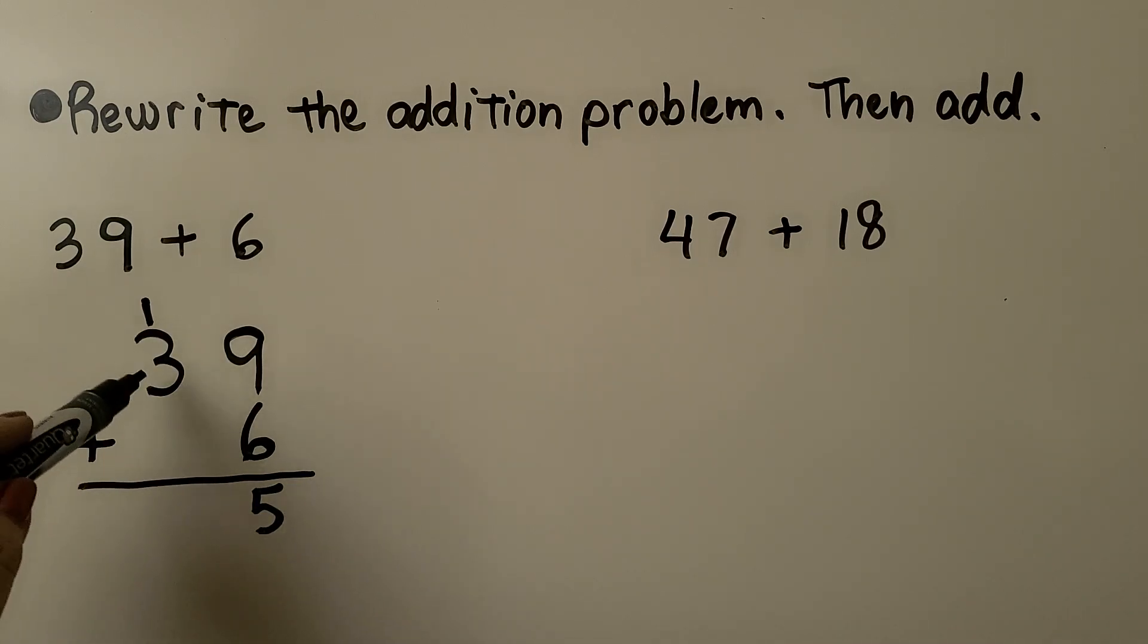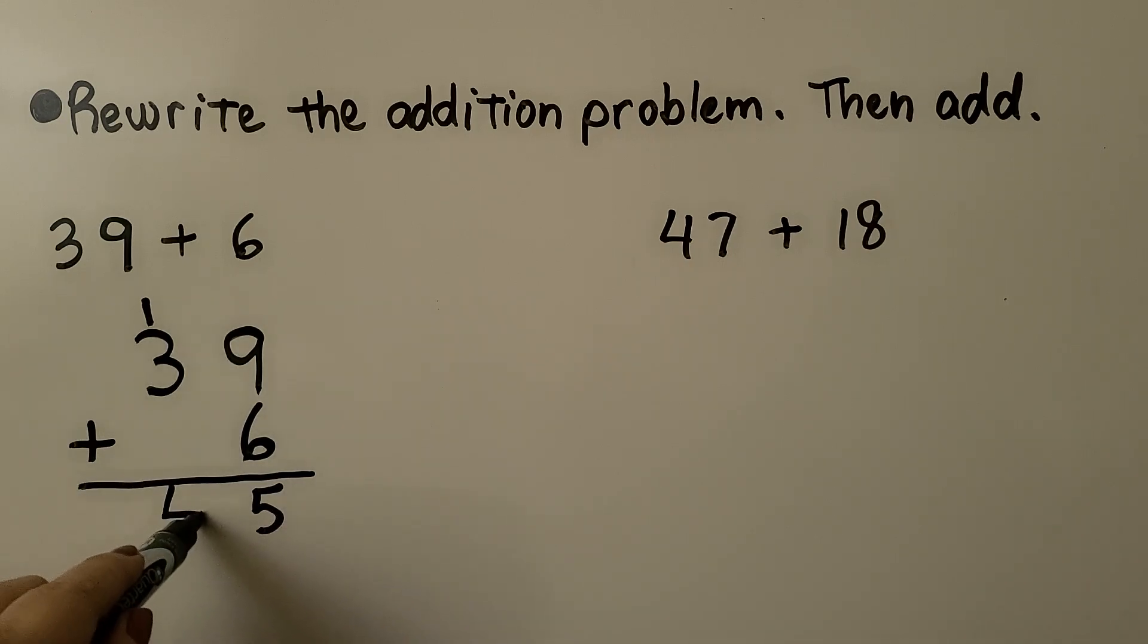Now we add the tens. 3 plus 1 is 4. 39 plus 6 is equal to 45.